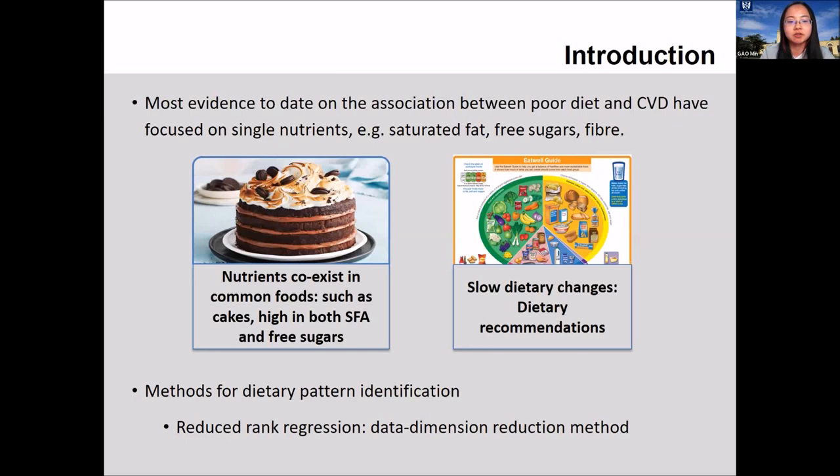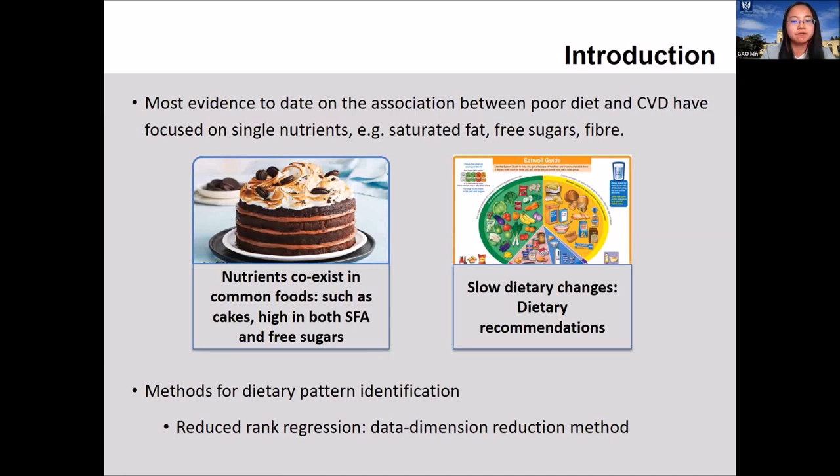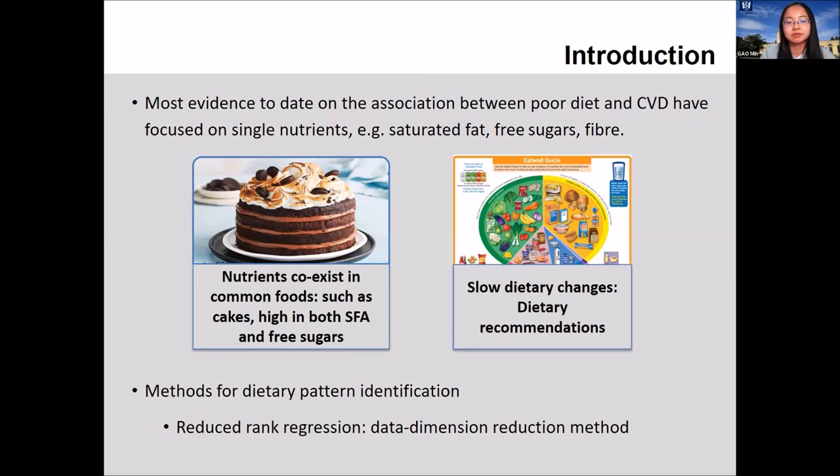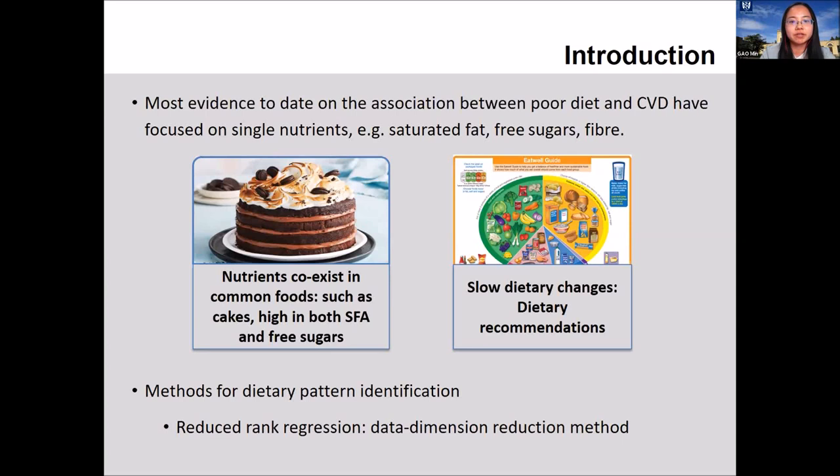Despite years of public health efforts, population dietary change has been slow, and this may reflect in part the difficulties of translating present dietary recommendations into food-based public health advice. Some existing recommendations are not universally echoed across countries. Increasingly, researchers have tried to categorize dietary patterns using reduced rank regression, a data dimension reduction technique that aims to identify the combination of food groups that explain the maximum amount of variation in a set of response variables, which could reflect population-specific food preferences.